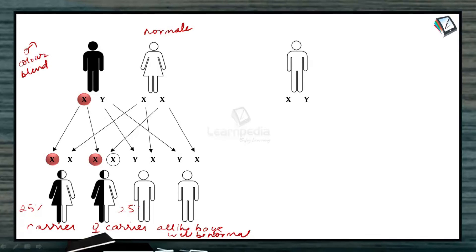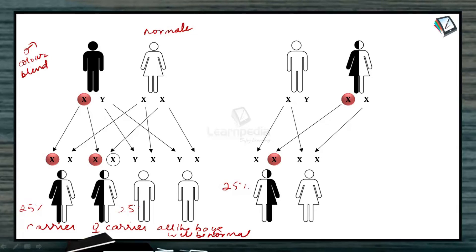Then suppose the father is normal and the mother is a carrier. Then what happens? Then the girl will be 25% carrier and 25% normal. The boy born to them will be colorblind, and there is a possibility that they get a normal boy.